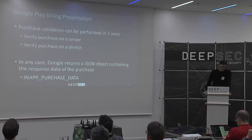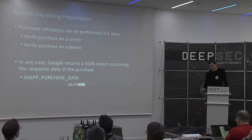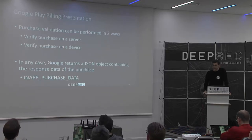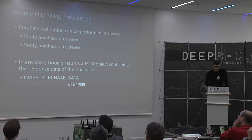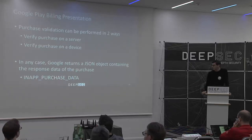To validate the purchase, Google allows two ways: you can perform purchase verification on a server, or verify the purchase on the device. In either case, a JSON object containing the response data of the purchase is sent to the application. In the documentation, they call this JSON object the 'in-app purchase data'.